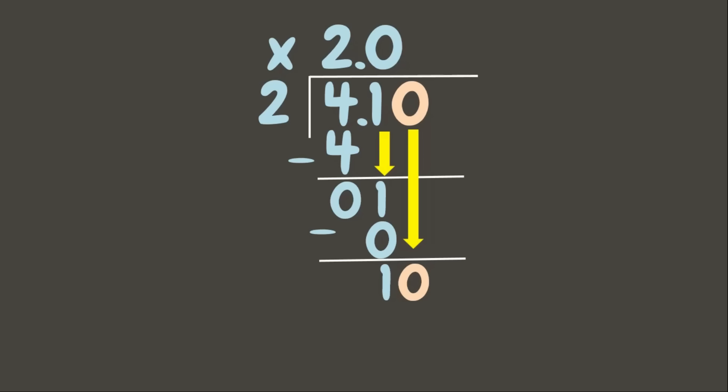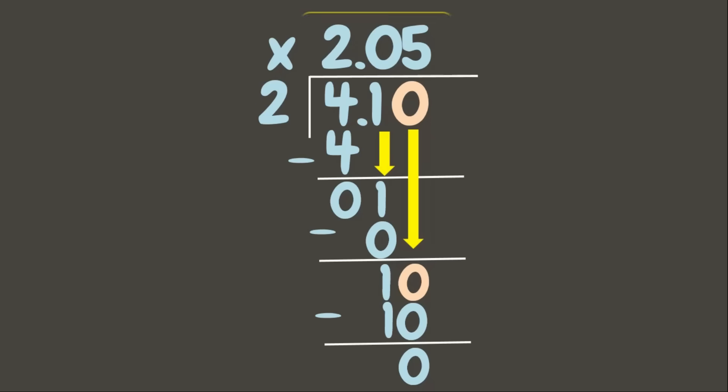Bring down 0. 10 divided by 2 is 5. 5 times 2 is 10. 10 minus 10 is 0. Since there is no more remainder, our answer is 2.05 — that is 2 and 5 hundredths.